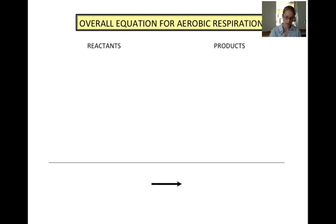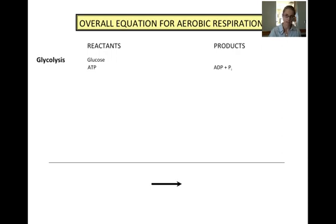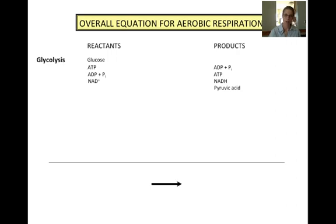Let's look at the reactants and products for each stage of cellular respiration. It may be helpful to refer back to the diagrams of each stage as you hear the next part of this presentation. Glycolysis starts with glucose. For the energy investment stage, ATP is a reactant and ADP and inorganic phosphate are products. For the energy producing stage, ADP and inorganic phosphate are reactants and ATP is a product. NAD+ is also a reactant and NADH is a product. Glycolysis ends with the production of pyruvic acid.